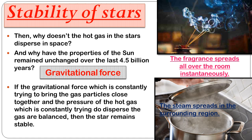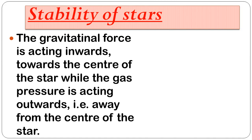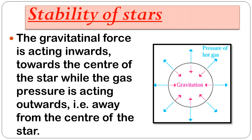Here you can observe a diagram in which gravitational force acts inwards — towards the center of the star — while gas pressure acts outwards, away from the center of the star. At the center of the star, hydrogen gas is present. This is how a star achieves stability due to the gravitational force and pressure of hot gases acting in opposite directions.